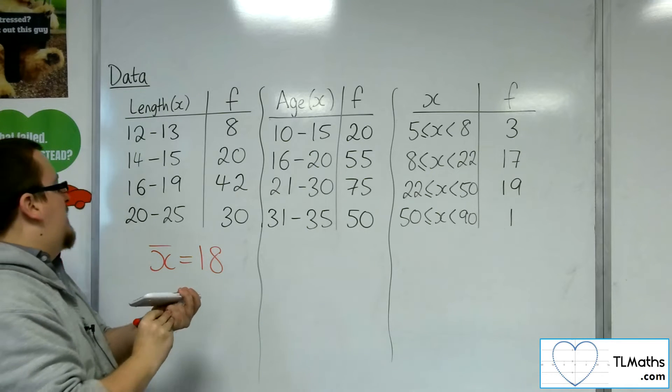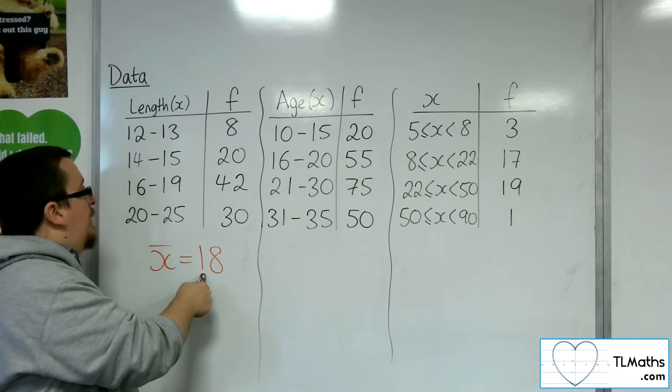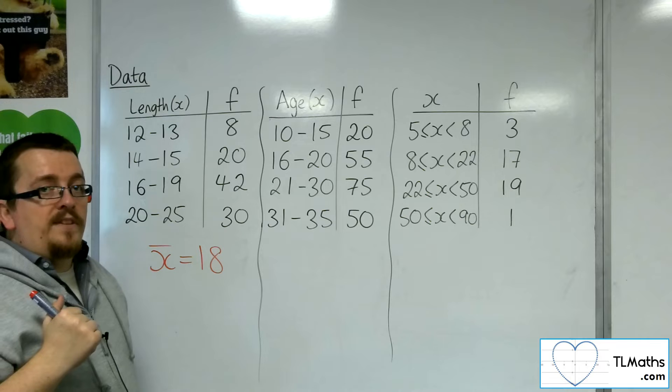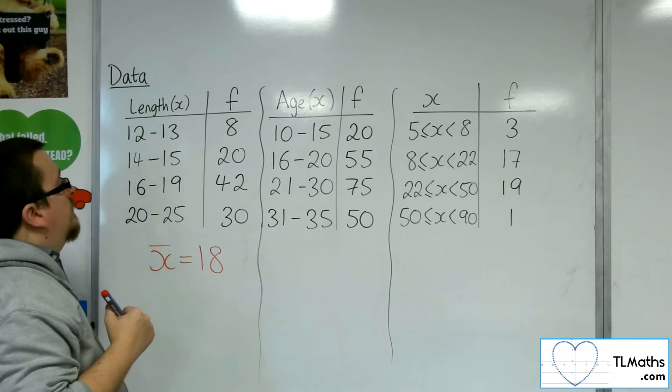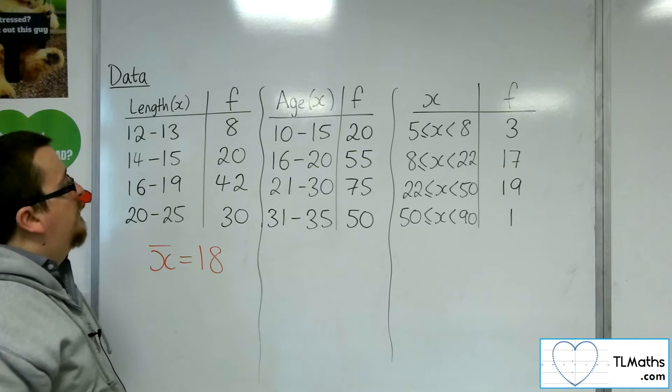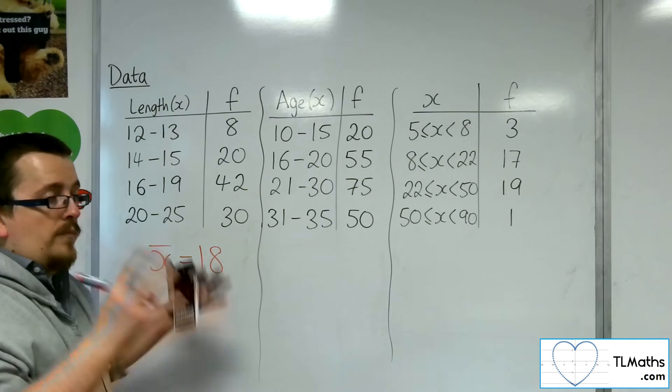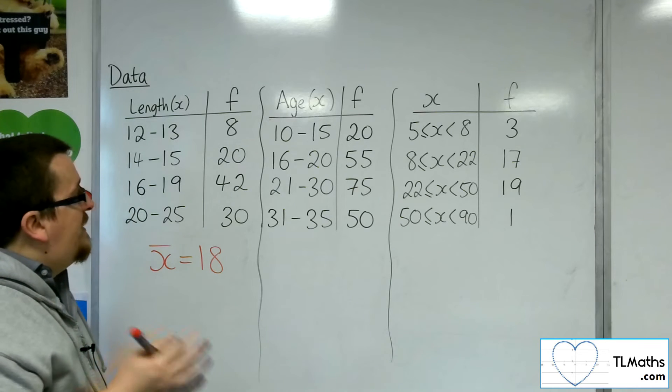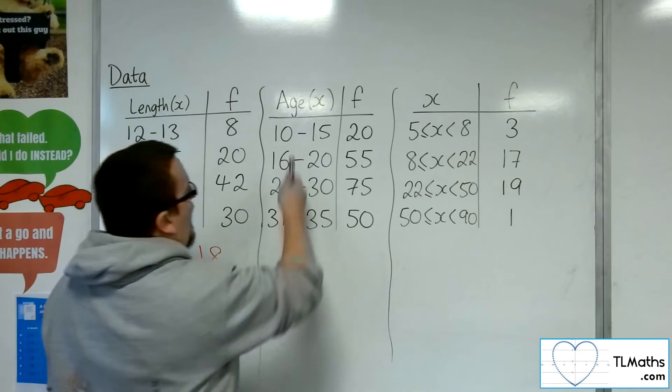So 18 is the mean for this set of data, and it makes sense seeing as that is where the largest set of data was, 42. So always check back to see if it makes sense. Now the second one looks very similar in style but is subtly different, because now we're talking about ages.